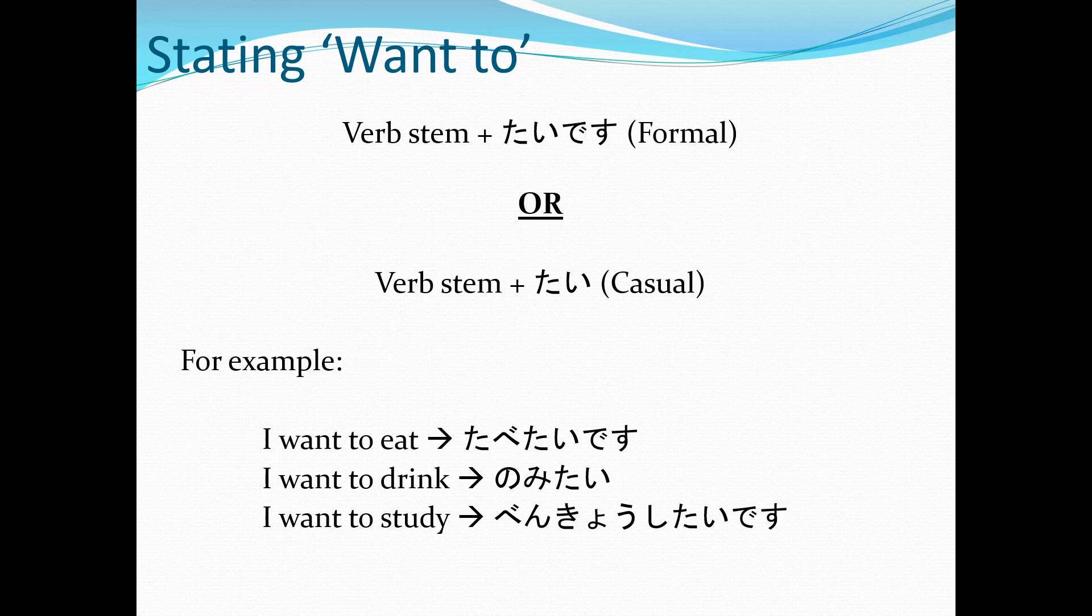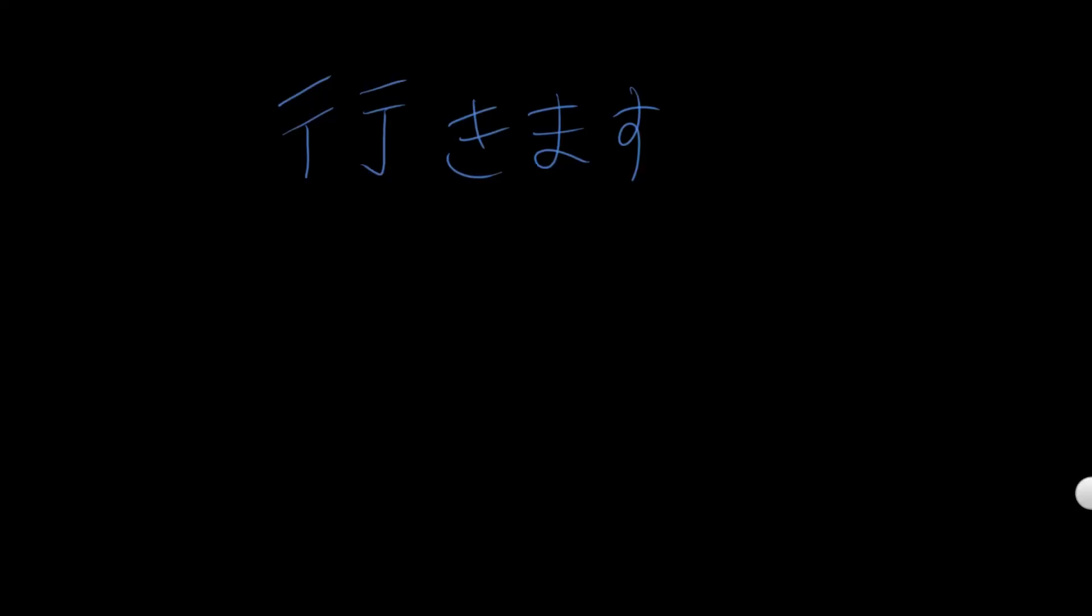So I'll quickly show an example and we can do this one together. 行きます, the verb to go. Again, pretty simple. Everything before the ます is the verb stem. So you get rid of the ます and that's the verb stem there. 行き.